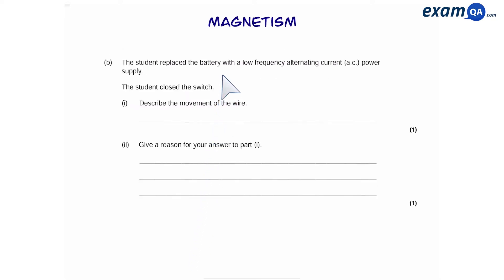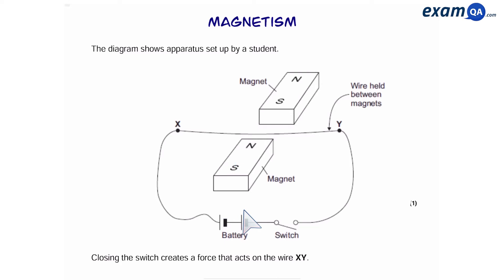Next part. The student replaced the battery with a low frequency AC power supply. The student closed the switch. Describe the movement of the wire and give a reason for your answer. So the battery down here is a DC power supply. However, we're going to change that with an AC, also known as an alternating current. So when we close the switch, we're going to have a flow of current just like before. However, because it's an AC, that means the direction of the current will change.